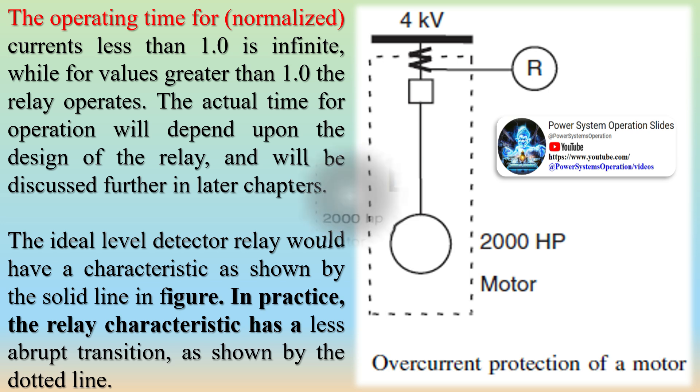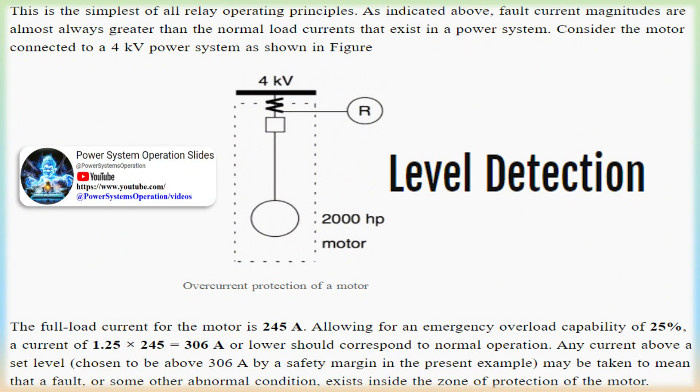active and reactive power, frequency of the power system, etc. Relay operating principles may be based upon detecting these changes, and identifying the changes with the possibility that a fault may exist inside its assigned zone of protection. We will divide relays into categories based upon which of these input quantities a particular relay responds.